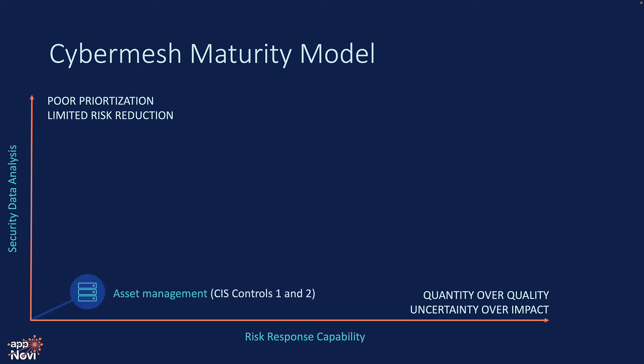The first step in this process is effective asset management, which typically ties to CIS Core Controls 1 and 2. Asset management means we need to pull in all of our asset inventories across all of our different networks, inclusive of both virtual and physical, and understand assets and software. At this point, we can start to identify assets that don't have the appropriate security controls in place, such as EDR agents.